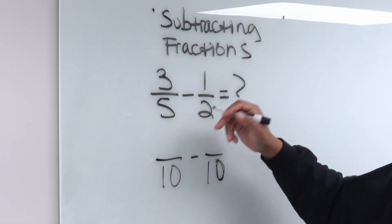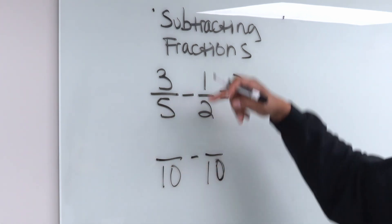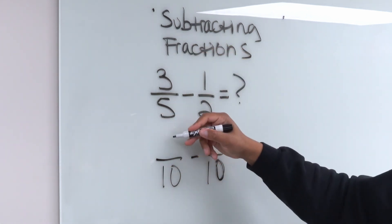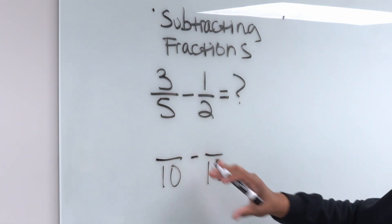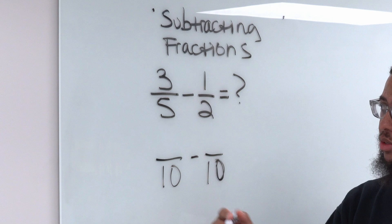So, but this is the thing. If my denominator changes, my numerator has to change. I can't just write 3/10 or 1/10 because that wouldn't be equivalent because we want to change the numbers but keep the same value.